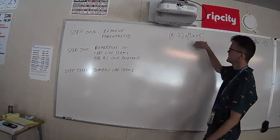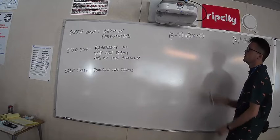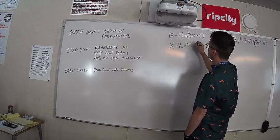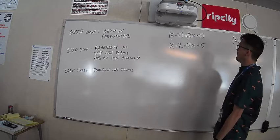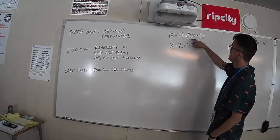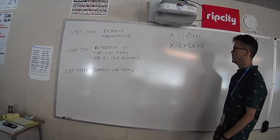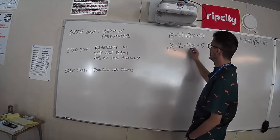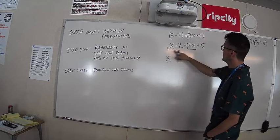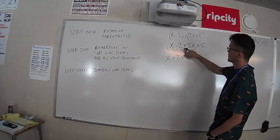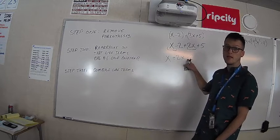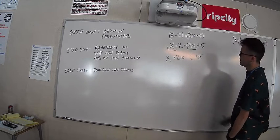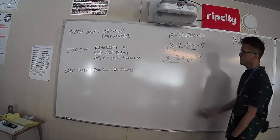First example: we have two binomials being added together — (x minus 2) plus (2x plus 5). Step one, remove the parentheses: we keep things in the same order and write x minus 2 plus 2x plus 5, preserving the signs in front of each term. Step two, rearrange so like terms are together: I see an x and another x, and two constants. So we write x plus 2x, then negative 2 — keeping that negative sign, which is the part that trips most people up — then plus 5.